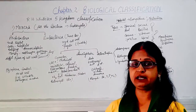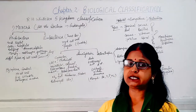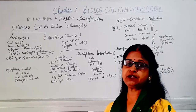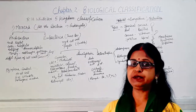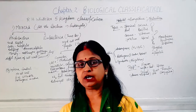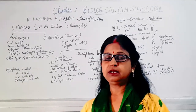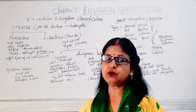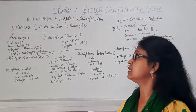Now the general characteristic features of bacteria. First is habitat — where are they found? Bacteria are found everywhere: soil, water, air, desert, hot springs, and on the bodies of other organisms. They are present everywhere, which is why they are called omnipresent.